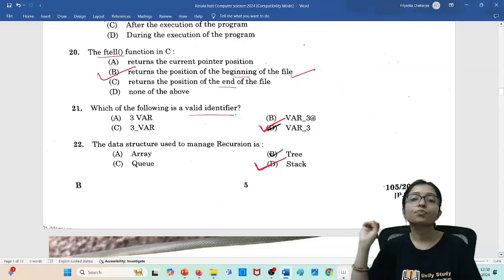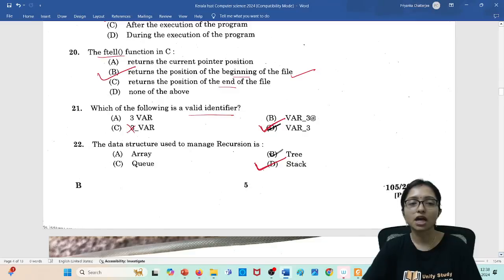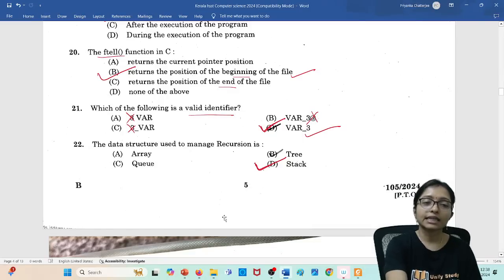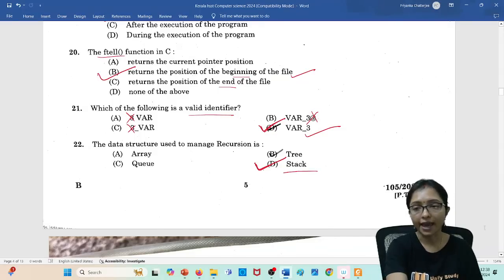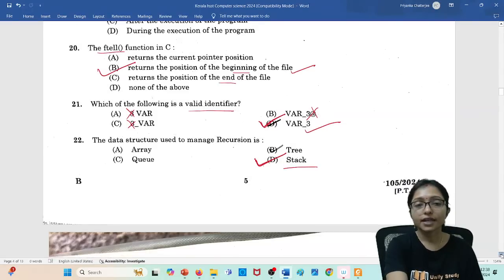Which of the following is a valid identifier? Identifier should start with either a character or underscore. It cannot start with a number and special characters are not allowed. So this is your answer. The data structure used for recursion: obviously answer should be stack.